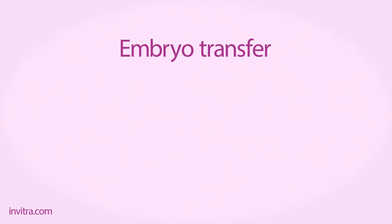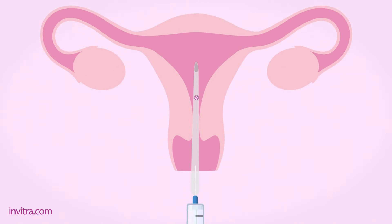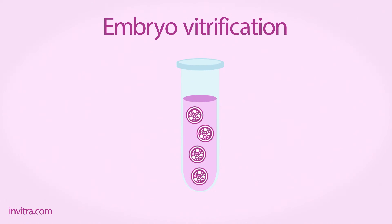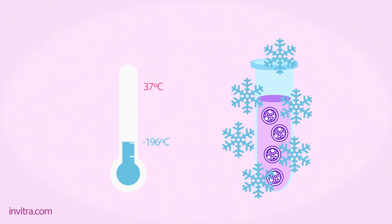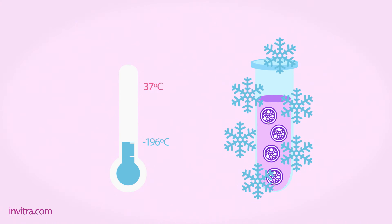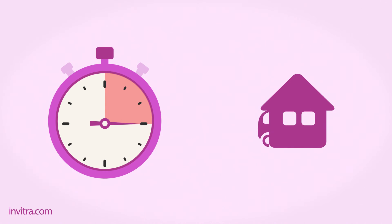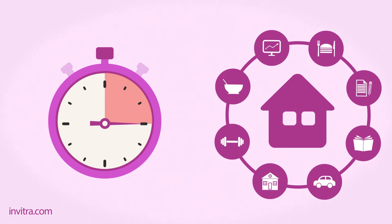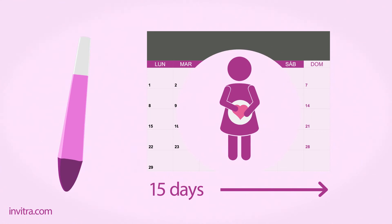Step 6: Embryo transfer. The embryo or embryos with the highest quality are transferred to the mother's uterus. Step 7: Embryo vitrification. Unused viable embryos are frozen by means of a technique called embryo vitrification, so that they can be used in future cycles. After the embryo transfer, women rest for no longer than 15 minutes, then they can come back home and continue with their normal lifestyle.